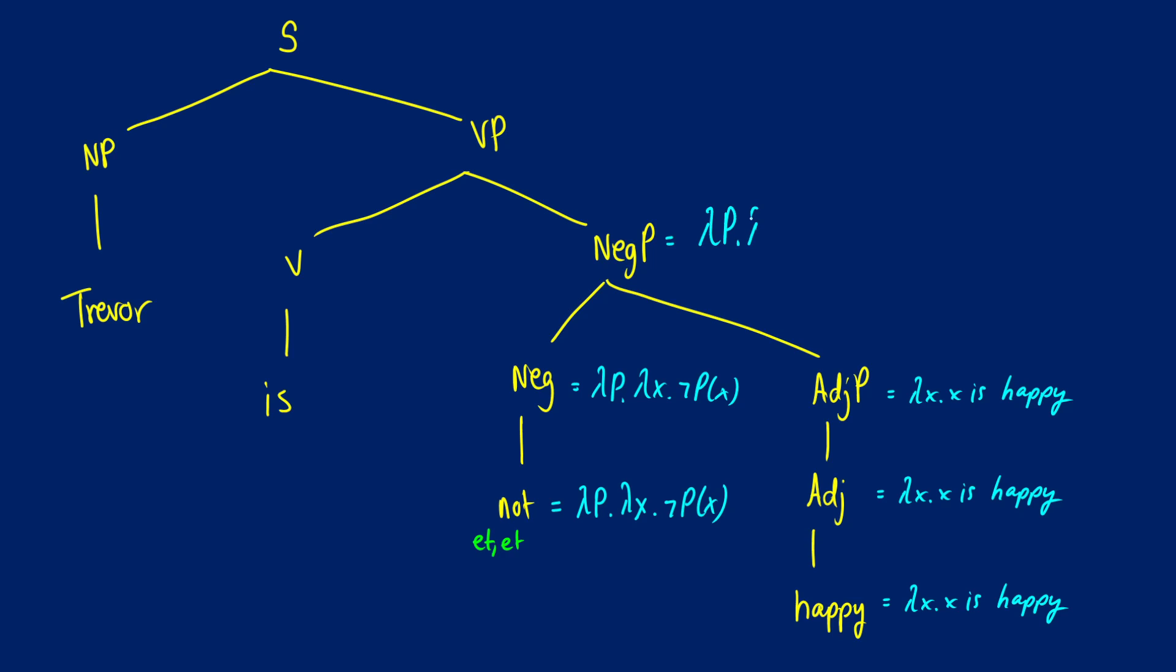So let's do this piece by piece, lambda p dot lambda x dot not px. So this is our function. And what are we applying? We're applying lambda x dot x is happy. So what's going to happen is that this is going to replace all of our p's. So this would evaluate to lambda x dot not p of x. So not x is happy, or we could rephrase this as x is not happy.